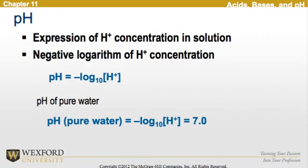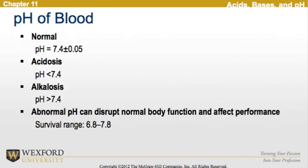If we look at pH, it is the expression of the hydrogen proton concentration in a solution. It is expressed as the negative logarithm of the hydrogen proton concentration, where pH equals the negative log of the hydrogen concentration. The pH of pure water is equal to 7.0. The normal pH of blood is 7.4, plus or minus 0.05.